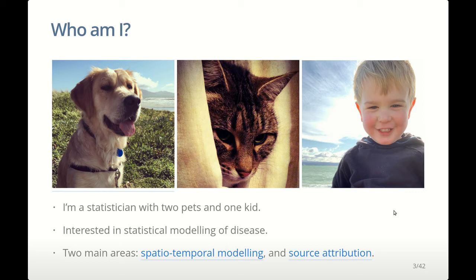For example, cases were in areas with lower vaccination rates, areas with lower access to healthcare, and areas with larger household sizes. We fit a model of cases in terms of things like the number of cases in previous weeks and the number of cases in surrounding areas, along with all those other measurable factors like vaccination rates.